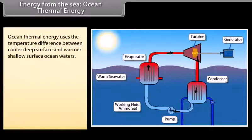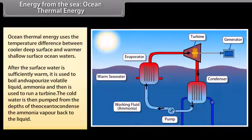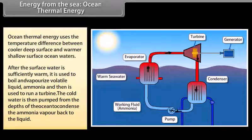Energy from the sea: Ocean thermal energy. Ocean thermal energy uses the temperature difference between cooler deep surface and warmer shallow surface ocean waters to run a heat engine and produce useful form of energy, mainly electricity. The heat engine gives greater efficiency and power when it is run with a large temperature difference. In the oceans, the temperature difference between surface and deep water is greater in the tropical areas, and in other areas it is a modest 20 to 25 degrees Celsius. After the surface water is sufficiently warm, it is used to boil volatile liquid ammonia. The vapours of ammonia are then used to run a turbine. The cold water is then pumped from the depths of the ocean and is used to condense the ammonia vapour back to the liquid.